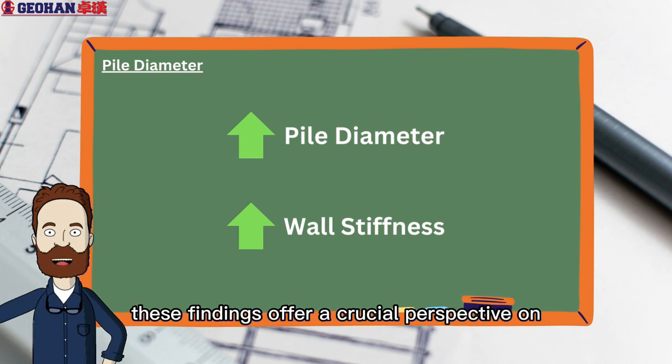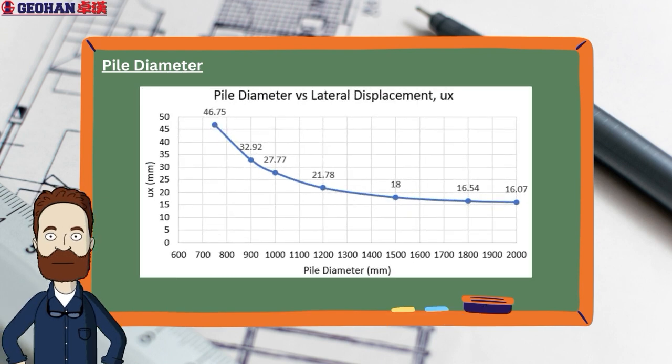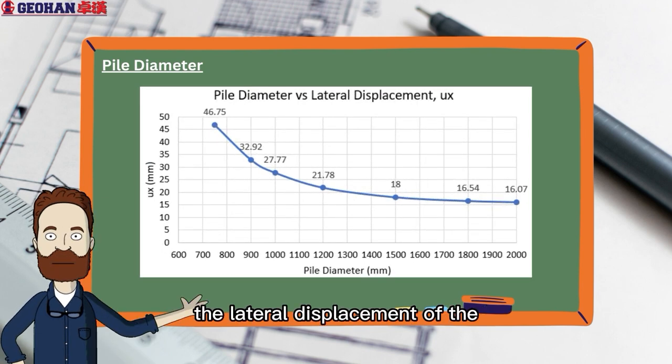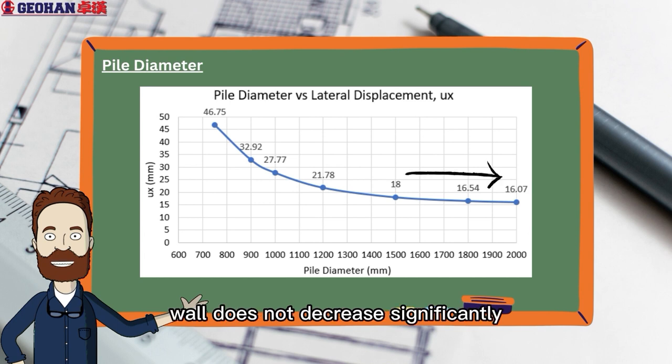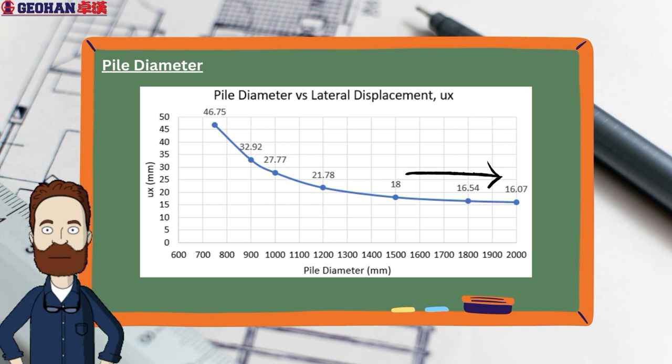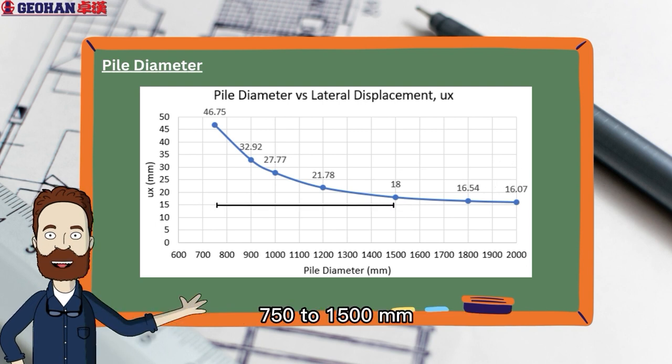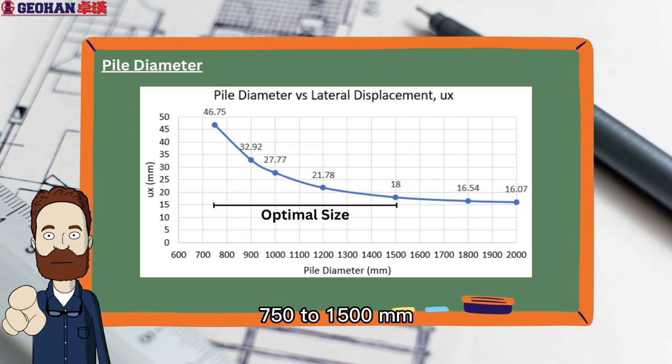Furthermore, these findings offer a crucial perspective on choosing the ideal pile size. As we can see in the graph, the lateral displacement of the wall does not decrease significantly after the 1500 millimeter pile. Therefore, the optimal pile size falls within the range of 750 to 1500 millimeters, depending on the acceptable deflection criteria of the wall.